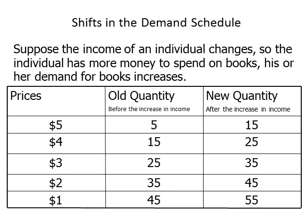In the table, there are three columns. The first column lists the prices of various books in the economy. The second column represents the quantity demanded at various prices before there is an increase in the individual's income. The last column represents the quantity of books demanded after the individual's income has increased.